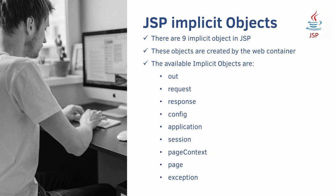Next is the GSP implicit objects. There are nine implicit objects in GSP. These objects are created by the web container and are available to all GSP pages. The nine implicit objects are: Out, Request, Response, Config, Application, Session, Page Context, Page, and Exception implicit objects.